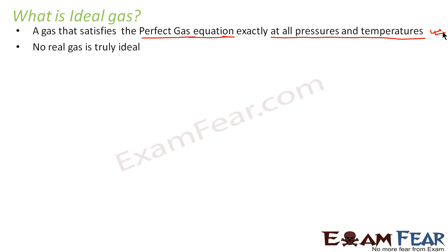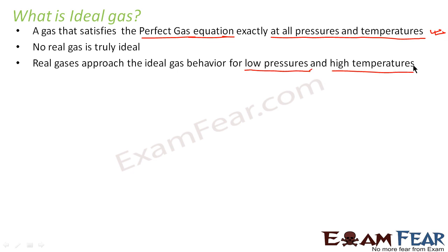So no real gas is truly ideal. So a gas which is not ideal is known as real gas. Real gases approach the ideal gas behavior for low pressure and high temperature. As I told you that normally in these two conditions, that is low pressure and high temperature, normally gases satisfy this equation. So we see that the real gases approach the ideal gas behavior, or in other words, real gases behave ideally for low pressure and high temperatures.